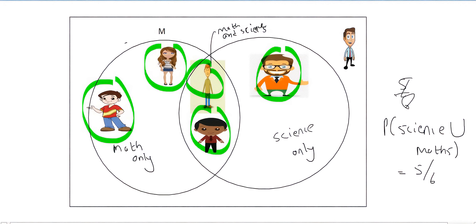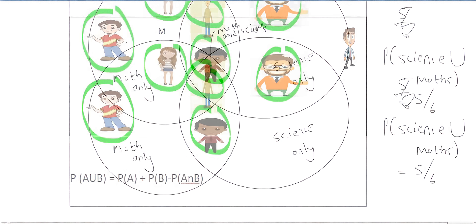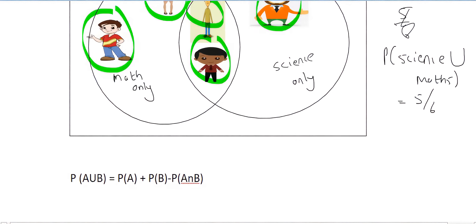If you wanted to use the formula that we looked at in the previous video for or, then you would use this. Now, that's how the formula would look in a test or on a formula sheet. But our A and B can be replaced with M and S, because we're doing maths and science. And so this part here says probability of maths or science. This says probability of maths and science. And so if we want to work out who does maths or science, we can count it on the Venn diagram. And that's what we did now.